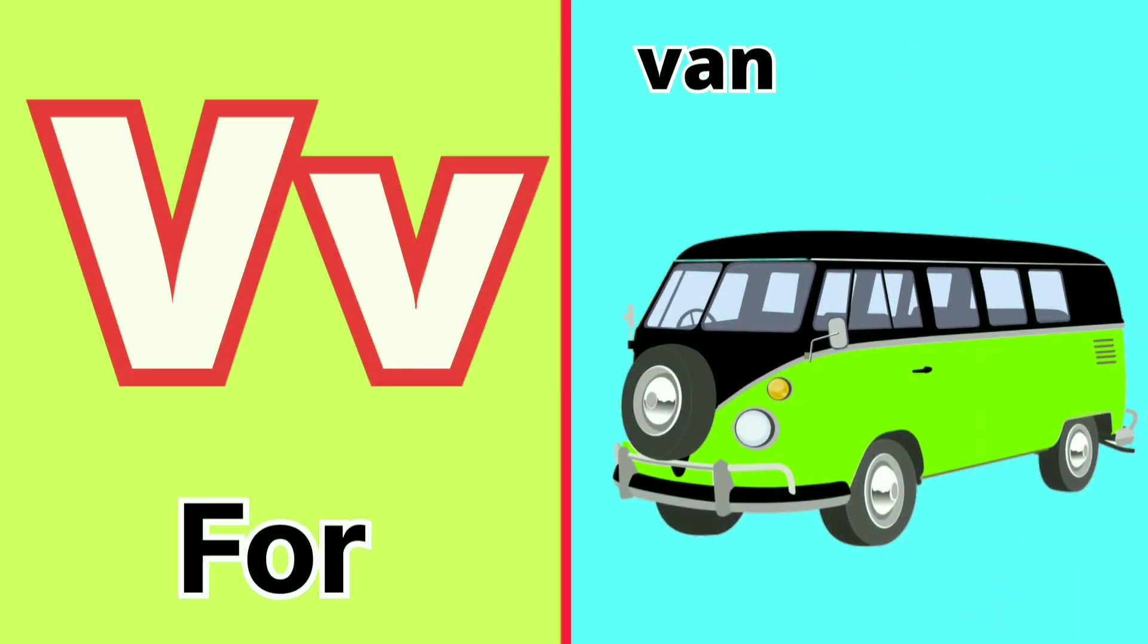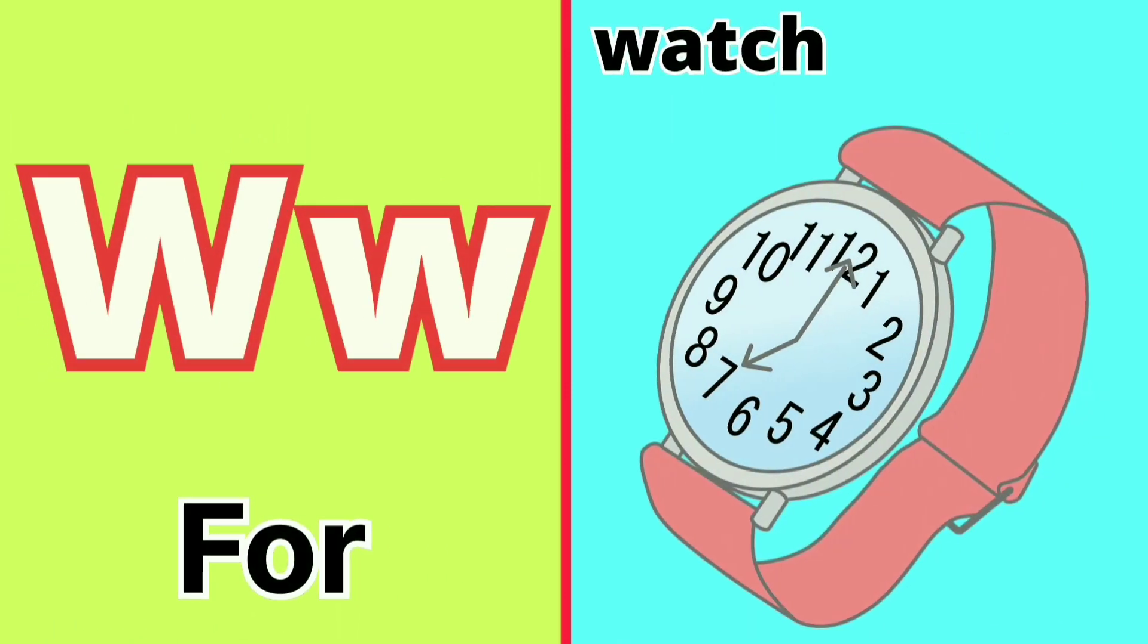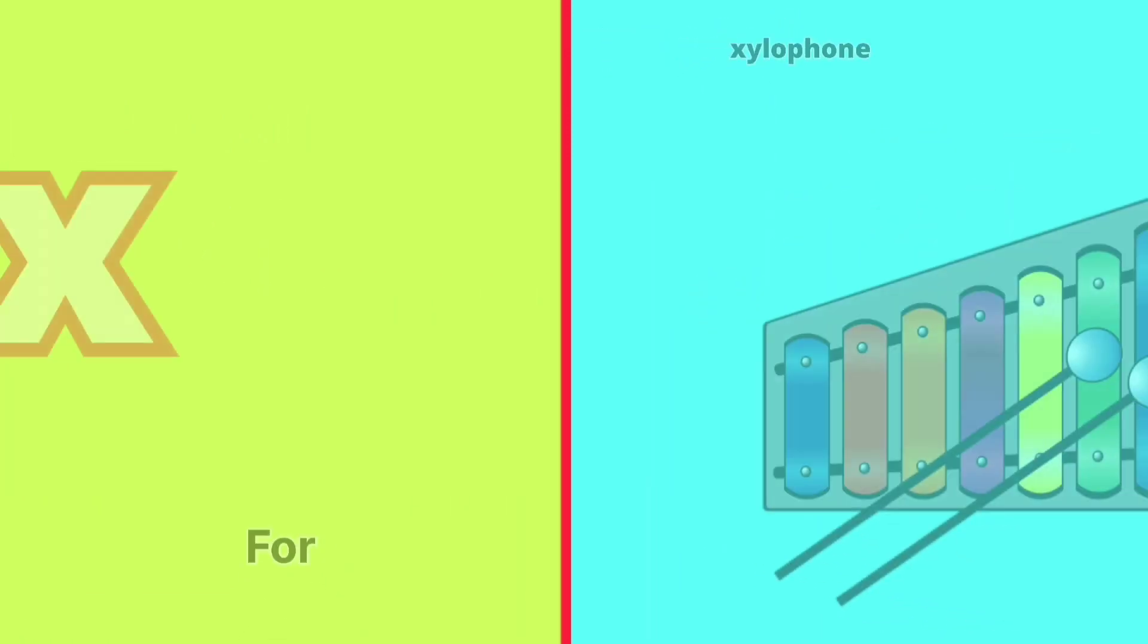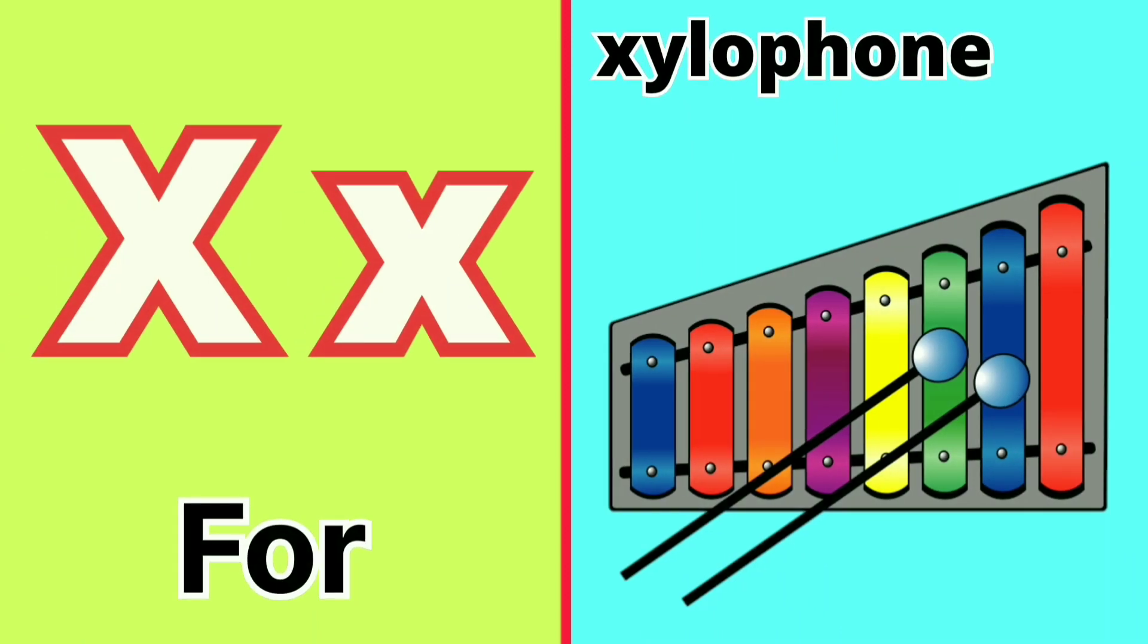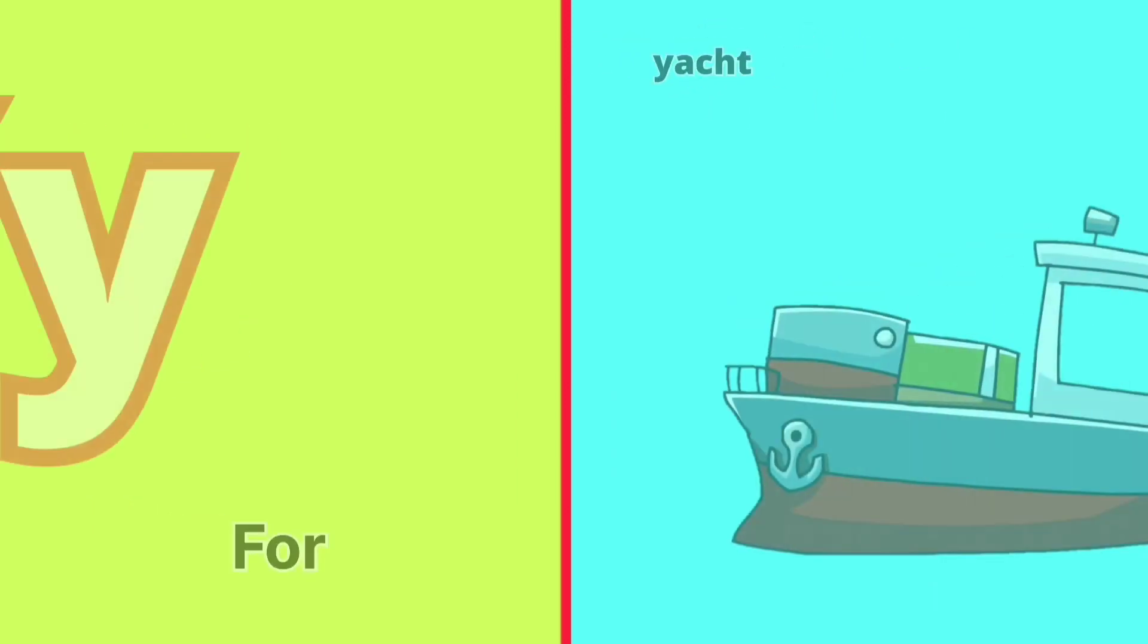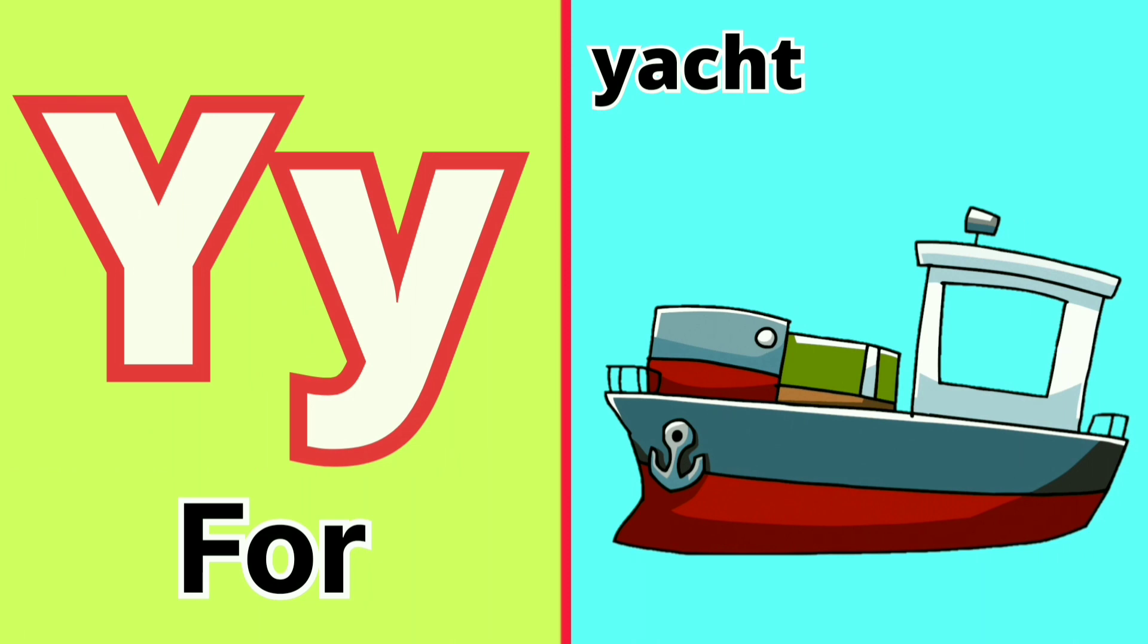V for Van, T for Train, U for Umbrella, V for Van.